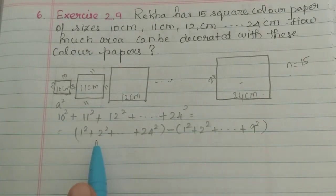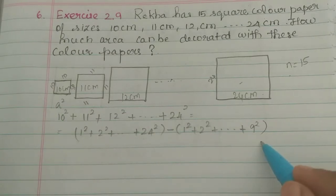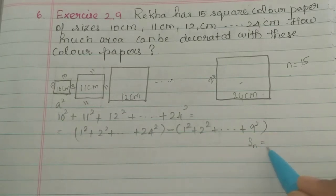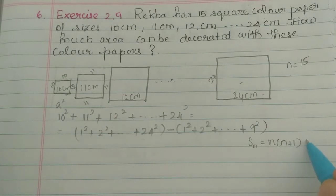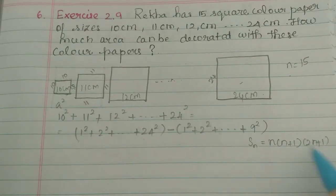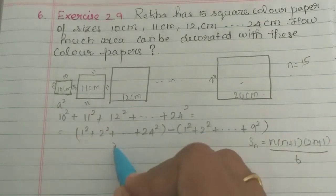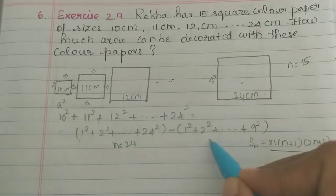So this is the sum of the squares of n natural numbers. The formula is n into n plus 1 into 2n plus 1 divided by 6. N value is 24, and here n value is 9.